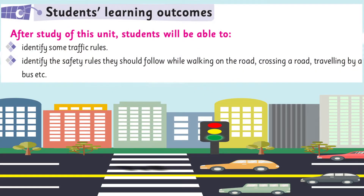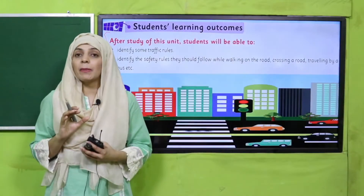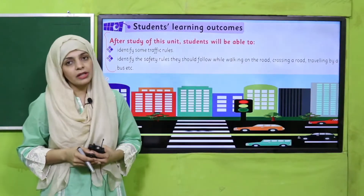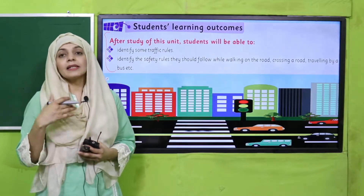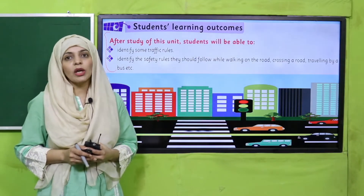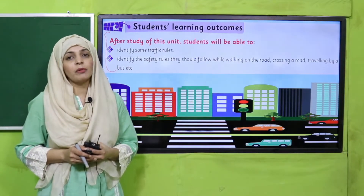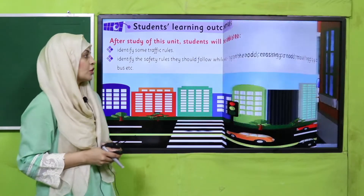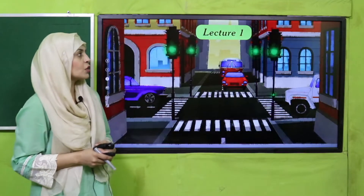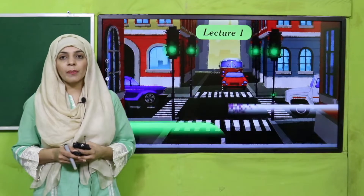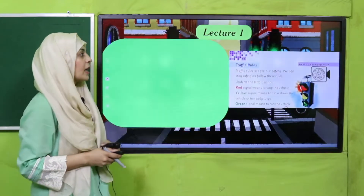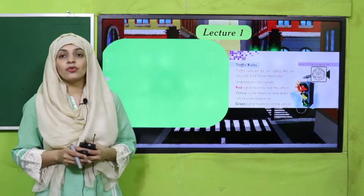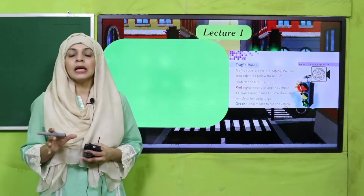Before moving on towards the review, let's quickly look at the student learning outcomes. These are the student learning outcomes of this unit, which we have covered alhamdulillah. From this review, today I will give you a revision, and by the end I will provide you with the worksheet. In lecture number one, we discussed about traffic signals.